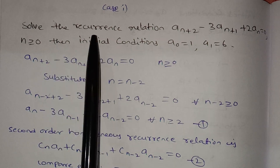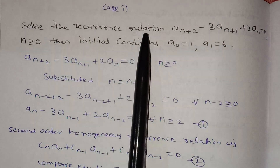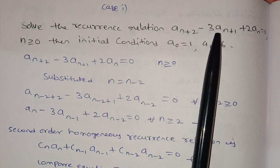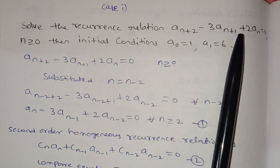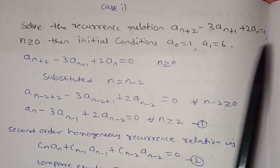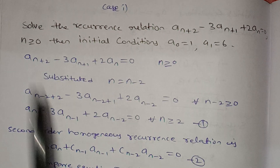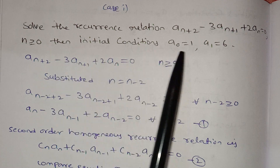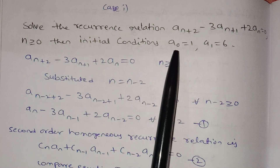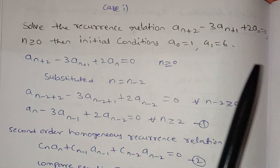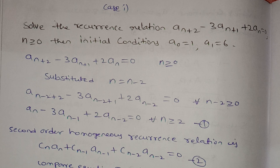Solve the recurrence relation: a(n+1) minus 3a(n+1) plus 2a(n) is equal to 0, n greater than or equal to 0, with initial conditions a0 is equal to 1, a1 is equal to 6.